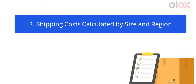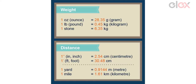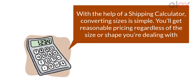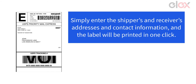Number three: shipping costs calculated by size and region. Different countries utilize different metric or imperial weighted item measurement methodologies. Metric measurements are used by countries that use the metric system, while results are given in cubic feet in countries using the imperial system. With the help of a shipping calculator, converting sizes is simple, and you'll get reasonable pricing regardless of the size or shape you're dealing with.